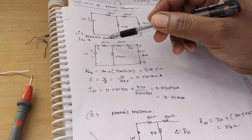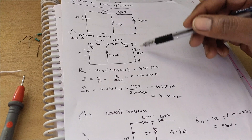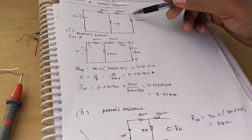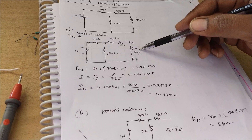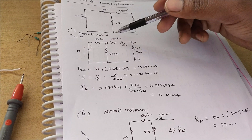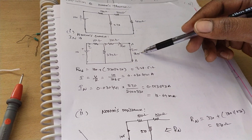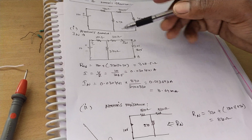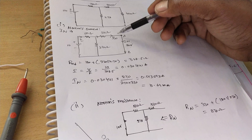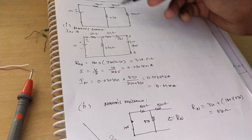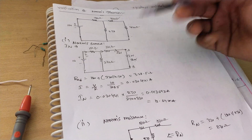First step: calculate Norton's current by removing the 470 ohm resistor. We remove that 470 ohm and replace it with a short circuit. Now with 180, 330, and 270 ohm remaining, the current through the 330 ohm resistance is Norton's current.